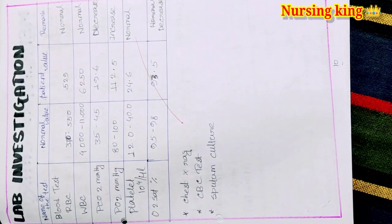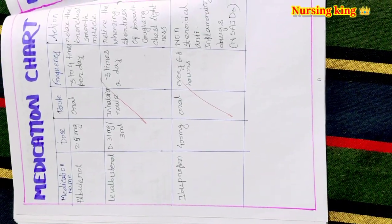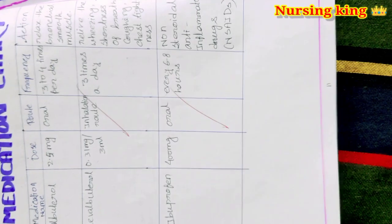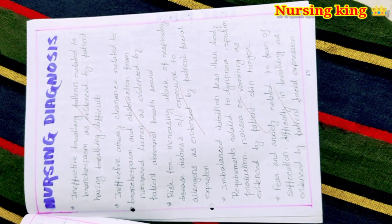In the lab investigation, blood test, WBC test, what are the tests you've done, you have to mention here. Then medication chart: what are the medication given, their route, dosage, route, frequency, what are the nursing responsibility you have to write.